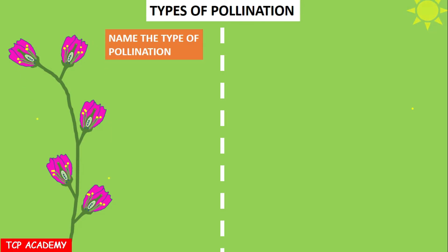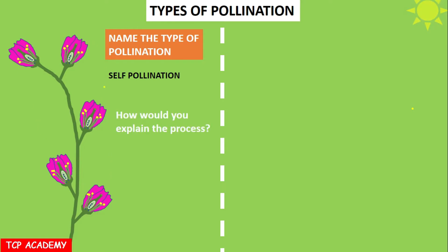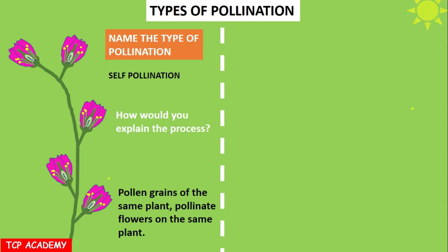Let's look at types of pollination. In the animation, pollen from the same plant moves to the stigma of the same plant. This is self-pollination. Pollen grains of the same plant pollinate flowers on the same plant. It is the same plant, the same flowers — this is self-pollination. It doesn't matter if it is the same species because we're just dealing with one plant here.